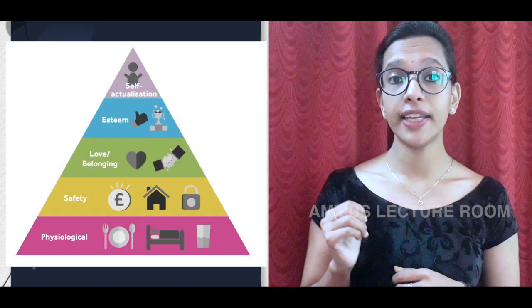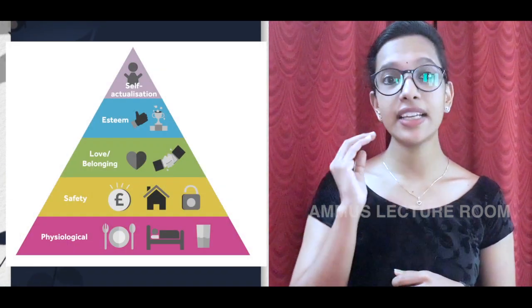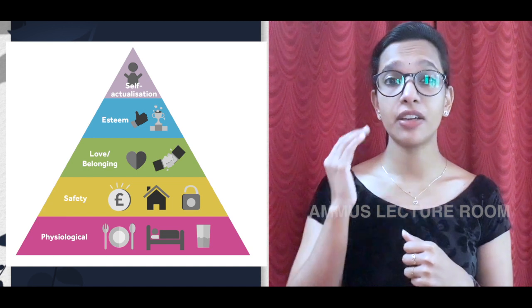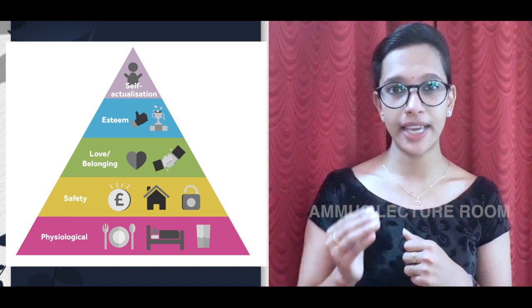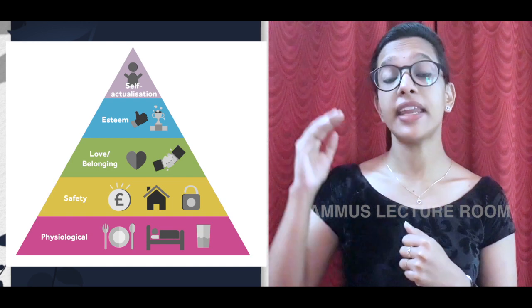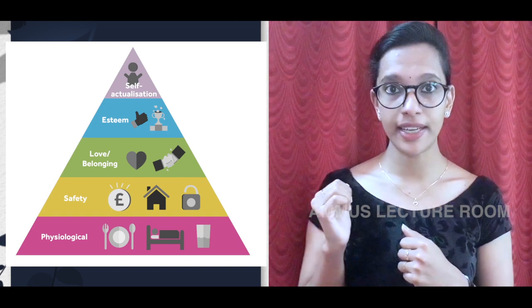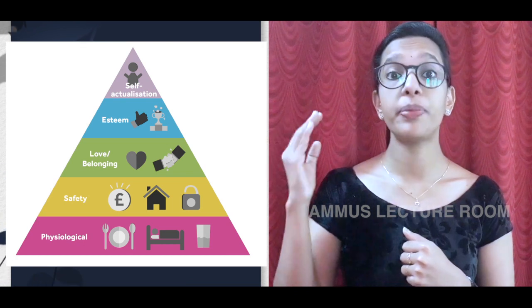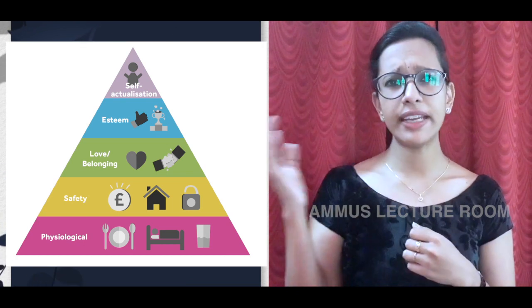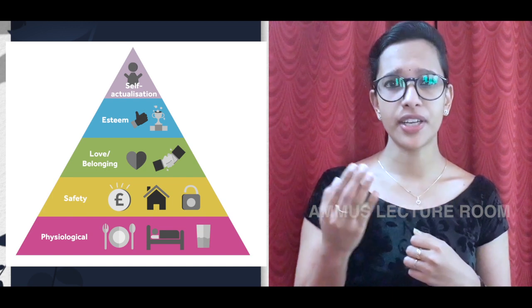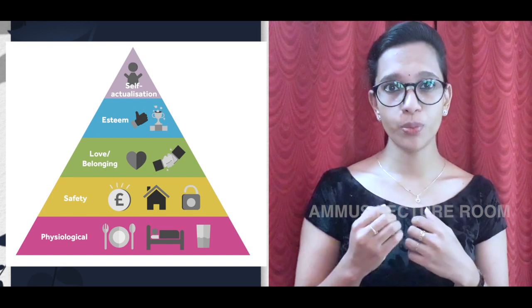The second level is safety needs, including shelter and removal from danger. The next level is social needs — love or belongingness needs. These include the need for love, affection, and being part of a group.